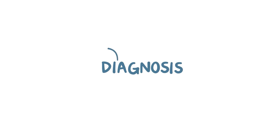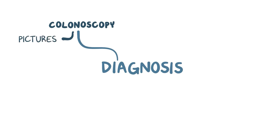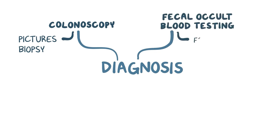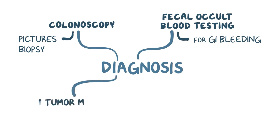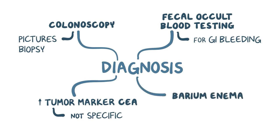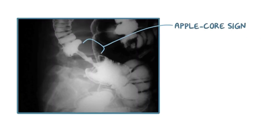Diagnosis of colorectal cancer typically requires colonoscopy, which is when a camera is inserted retrograde into the colon and rectum to take pictures of abnormal-looking polyps and get a biopsy. In addition, fecal occult blood testing is often done to look for evidence of gastrointestinal bleeding. Typically in colorectal cancer there's an elevation in the tumor marker CEA, which is a glycoprotein involved in cell adhesion, though this is not a very specific finding. A barium enema can be useful as well, where a liquid is injected into the rectum and an x-ray is taken to look for abnormalities. A classic sign on barium enema is the apple core sign, which shows constriction of the lumen, most often in the descending colon.